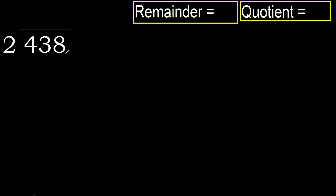438 divided by 2. 4 is not less. Therefore, with 4: 2 multiplied by which number is nearest to 4 but not greater? 2 multiplied by 3 is 6 — 6 is greater. 2 multiplied by 2 is 4 — 4 is not greater.